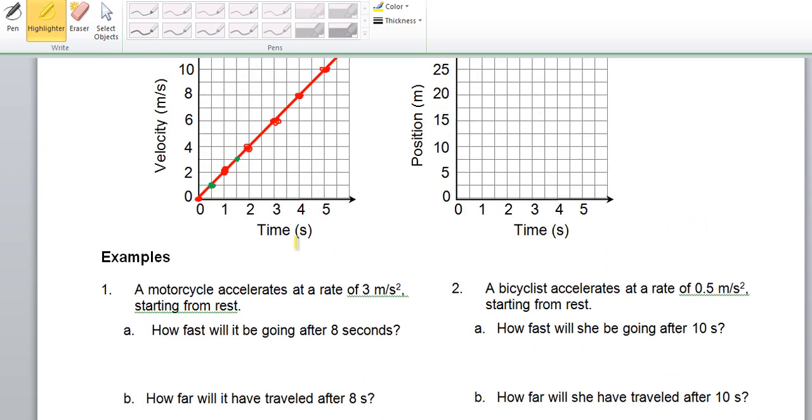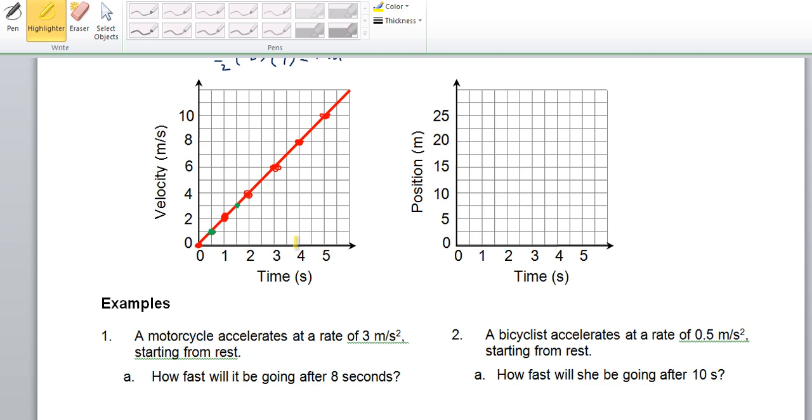Okay, let's take a look at the next graph. This is position versus time. So, we'll plot these points in green. So, at time zero, the position was zero. At time one second, the position was one. At time two seconds, the position was four. At time three seconds, the position was nine. At four seconds, the position was 16. And at five seconds, the position was 25.